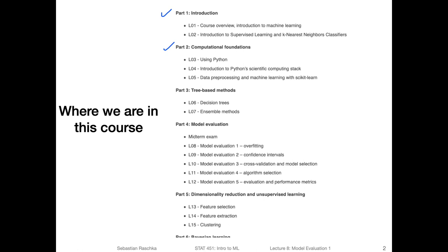As you all know, we covered the introduction, we talked about the computational aspects like Python, NumPy, and scikit-learn, and we talked about tree-based methods. There were some interesting questions like whether tree-based methods are still relevant, because the algorithms we talked about there were pretty old. But the main answer is yes, because there were ensemble methods — particularly boosting, gradient boosting, and random forests — which are very popular still in industry. Now we are going to cover model evaluation. There will be several subtopics: underfitting and overfitting, confidence intervals, cross-validation, model selection, algorithm selection, evaluation and performance metrics, and so forth.